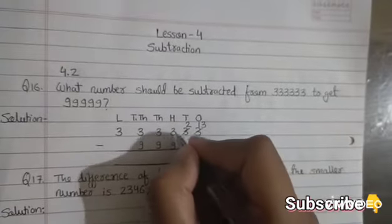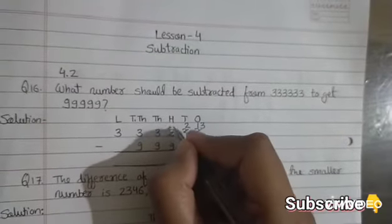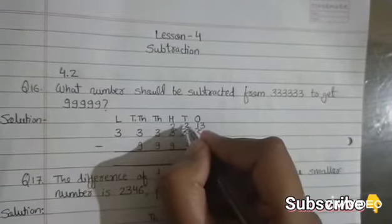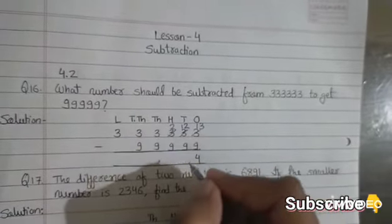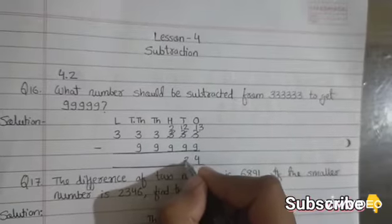2 is smaller than 9, so we will take borrow. 3 becomes 2, and this 2 becomes 12. 12 minus 9 is 3.